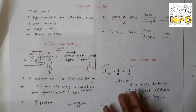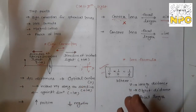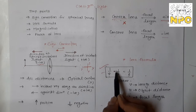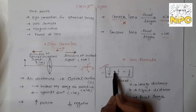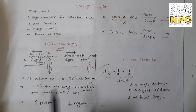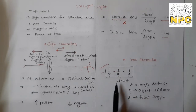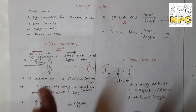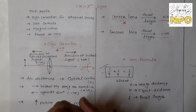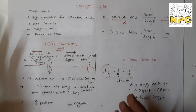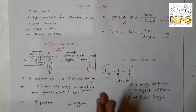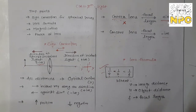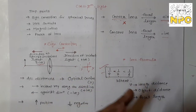Now I will explain the lens formula. As we have already learned about the mirror formula, similarly there is a lens formula. The only difference between the lens formula and the mirror formula is the sign. The lens formula is: 1/v − 1/u = 1/f. In the mirror formula it was a plus sign, but in the lens formula you use a minus sign. Here v is image distance, u is object distance, and f is focal length. In Class 10, you only need to learn the formulas; the full derivation will come in Class 12.